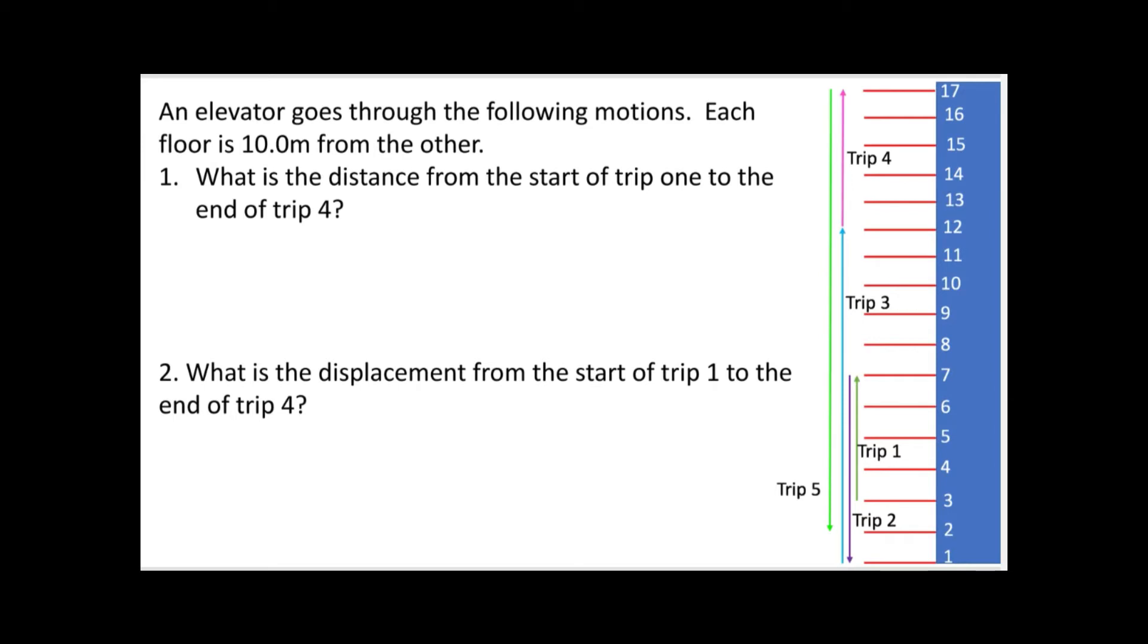So just draw the number line, I know it's annoying, but it will really help you get the right answer. This one is asking us the distance, okay? So the distance is the total amount the elevator moved from the start of trip one to the end of trip four. So trip one was 40 meters, and trip two was 60 meters, and trip three was 110 meters, and trip four was 50 meters. So then you're going to get 260 meters, and that's your total distance.